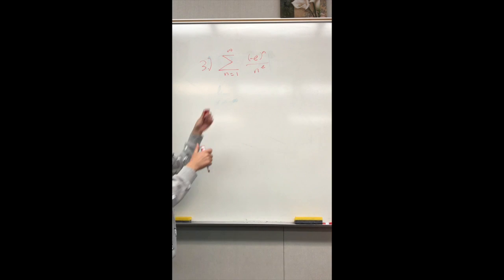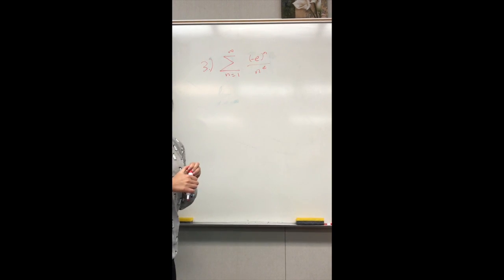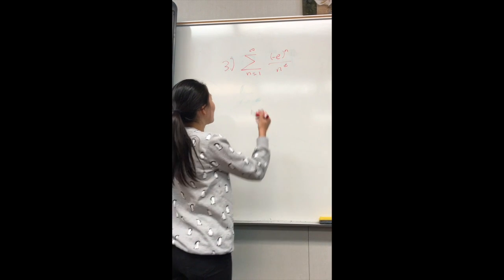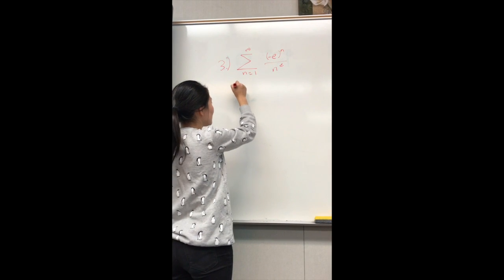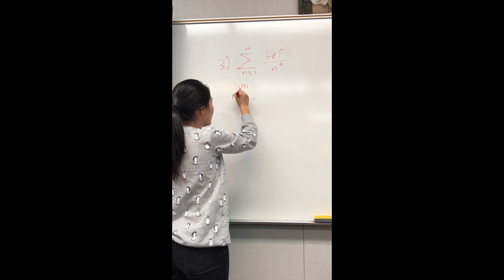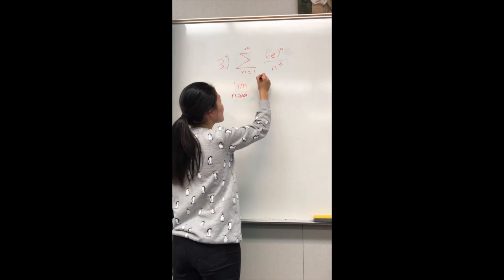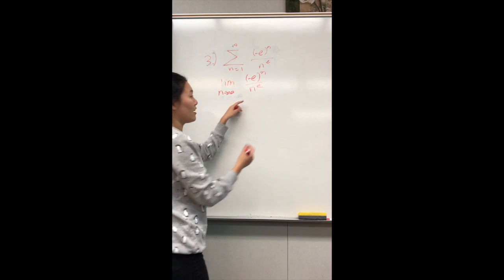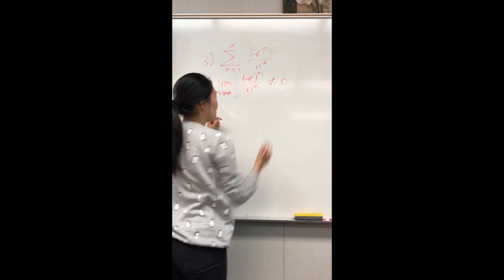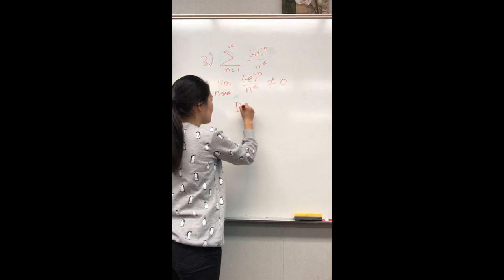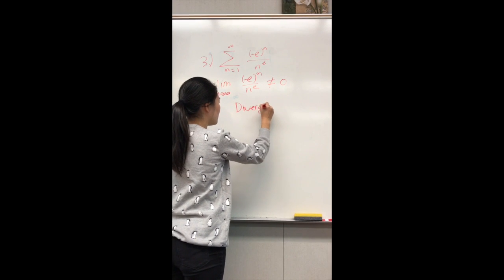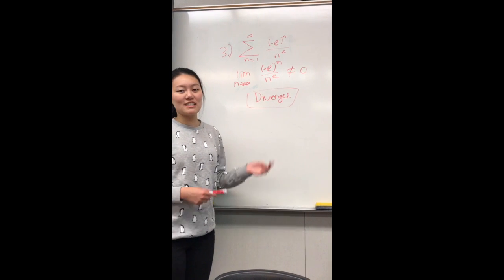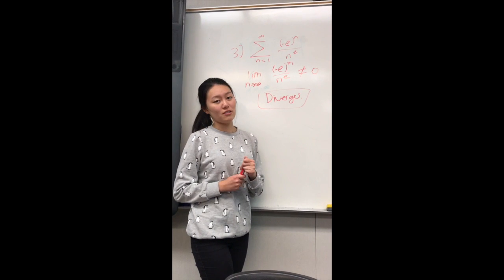The third problem: we start by finding whether the original series converges or diverges. We apply the nth term test, taking the limit as n approaches infinity of the series. Because this does not equal 0, the original function diverges. Because this function diverges, the absolute value of this function will also diverge.